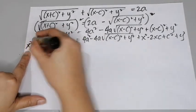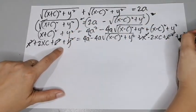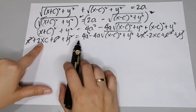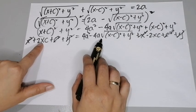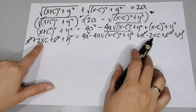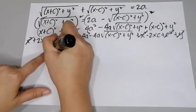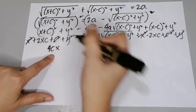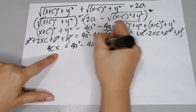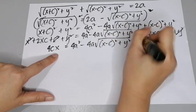After canceling, we have 2cx equals 4a² minus 4a times the square root of (x−c)² + y², minus 2cx. Moving the −2cx term gives us 4cx equals 4a² minus 4a times the square root of (x−c)² + y².